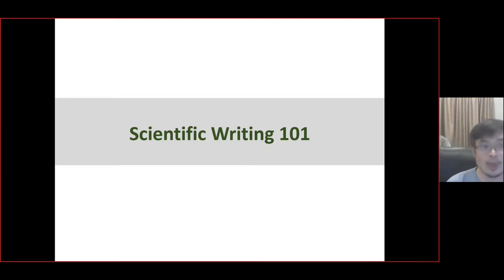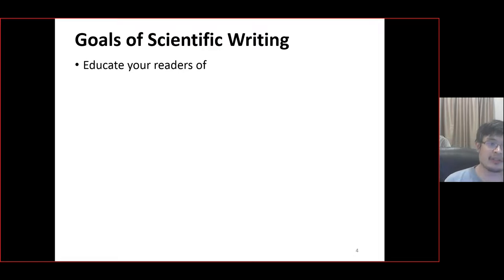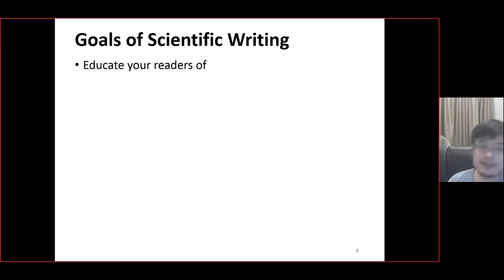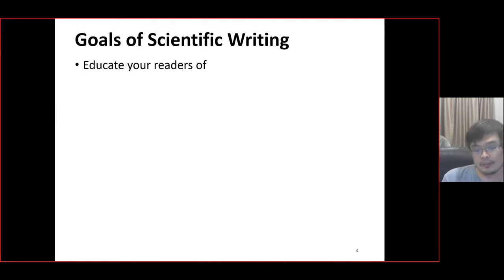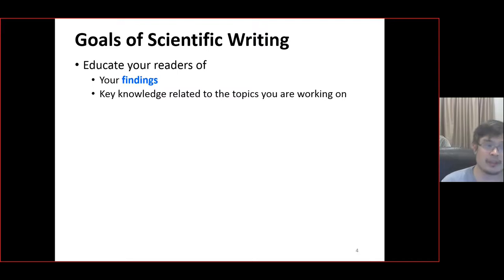The first thing to get started: what's the goal of scientific writing? The primary goal is to educate your reader. Your readers can be prospective PhD students, master's students like yourself, professors trying to catch up to new ideas that other groups are working on, or researchers. You want to convey your findings from whatever experiment you're running, whatever hypothesis you're trying to prove, and the key knowledge related to the topics you're working on.